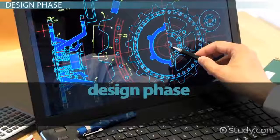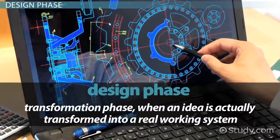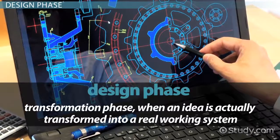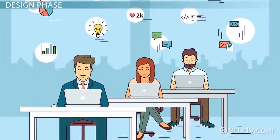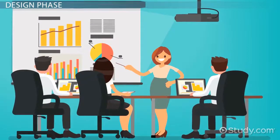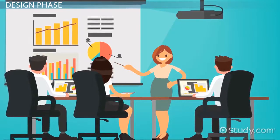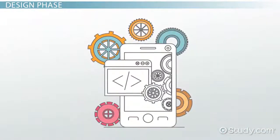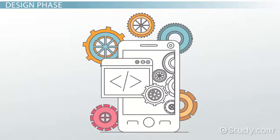The Design Phase can be referred to as the Transformation Phase, because this is when an idea is actually transformed into a real working system. Phase 2 comes to an end once a customer has agreed and signed off on the system. Once this happens, the building begins. Data is formed into charts, and the design team uses those charts to decide the best way for the data to move and be stored.